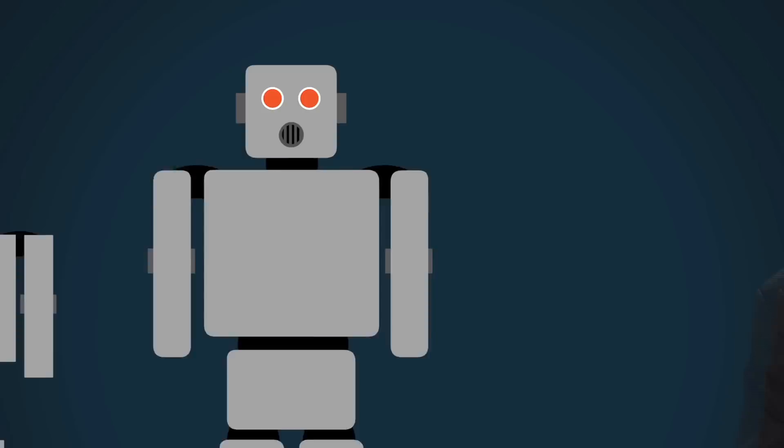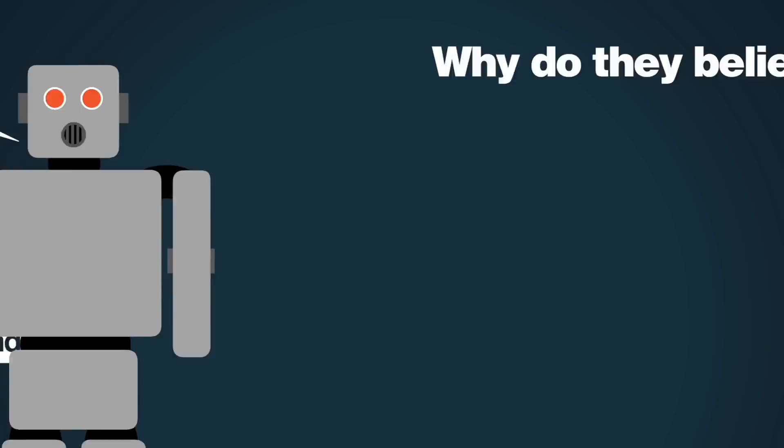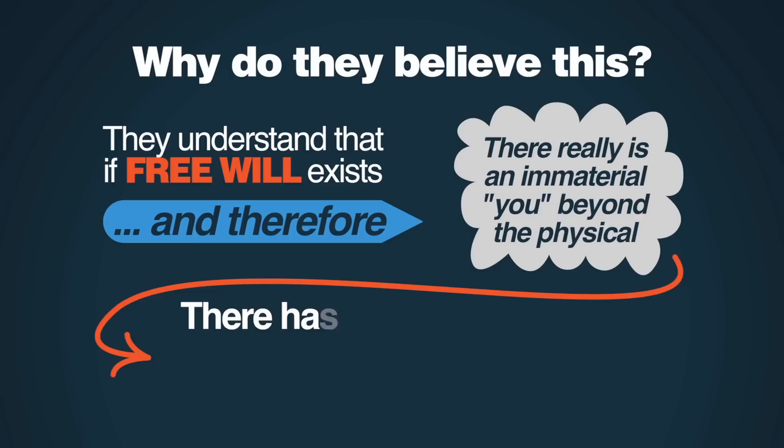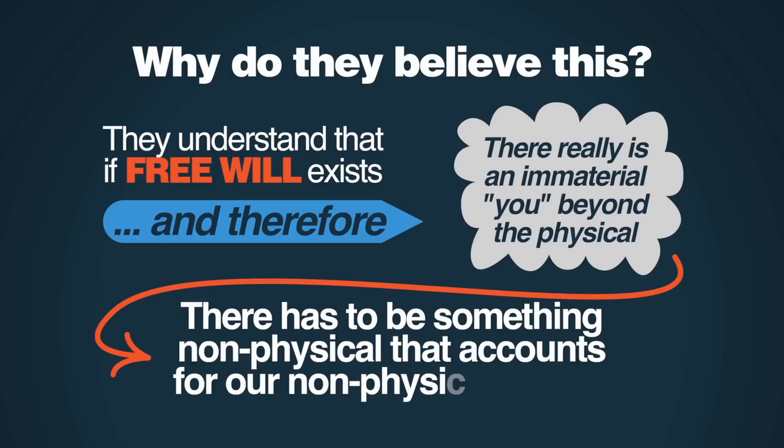These materialists believe that we're no more than robots and that free will is an illusion, a myth. Now, why do they believe this? Because they understand that the moment they acknowledge that free will exists, that there really is an immaterial you beyond the physical realm, that there really is a mind, not just a brain, then there has to be something non-physical that accounts for our non-physical minds.